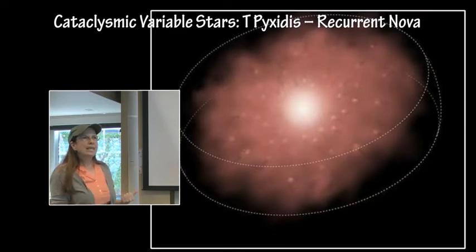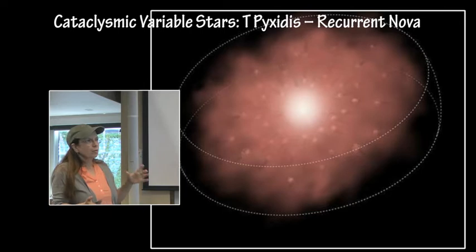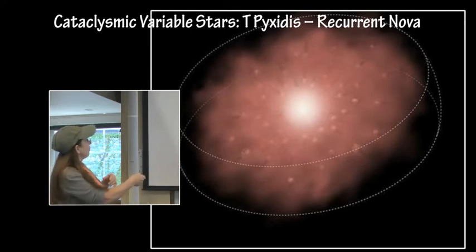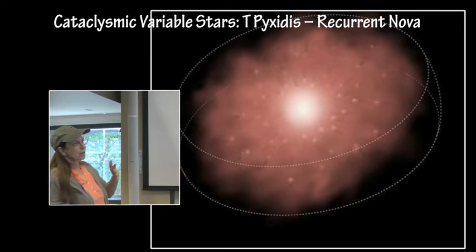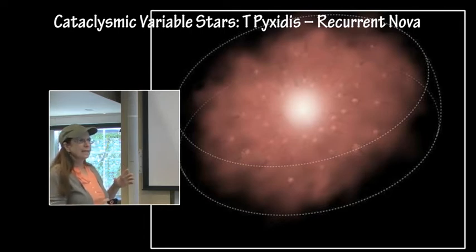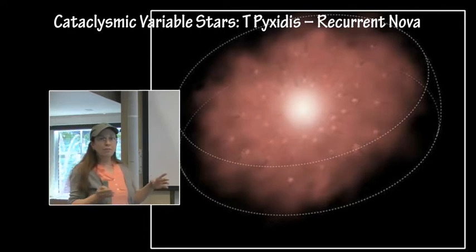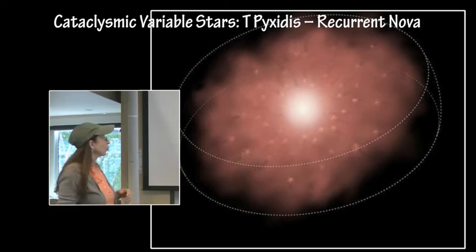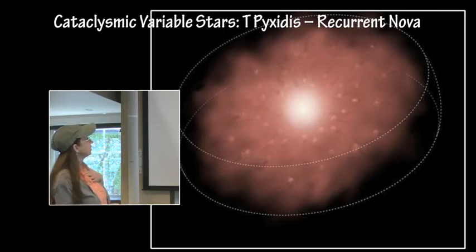It ejects the debris, but the debris doesn't move away from the system. It's trapped in this disk of all the debris that's been thrown off. Every time it goes nova, it produces all this debris field and it's confined within a disk. So maybe the companion star is acting with enough forces around this white dwarf to keep all the ejected material right there in that vicinity.